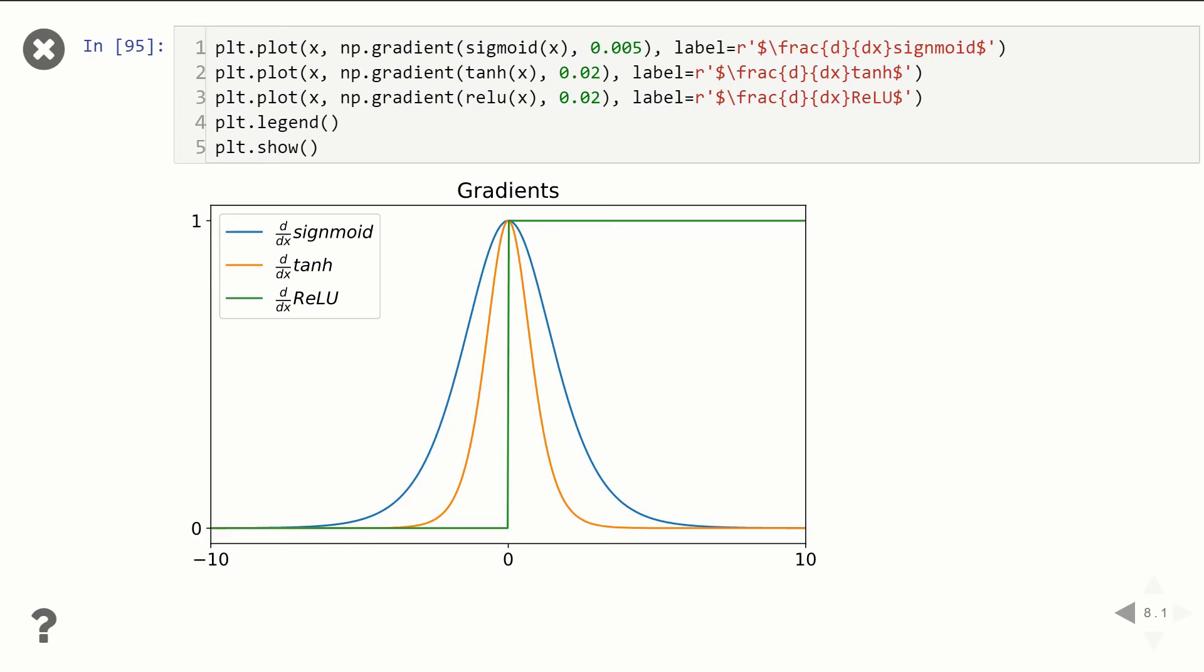So to wrap everything up, the ideal activation function for the majority of your layers is going to be either ReLU or leaky ReLU. The reason being it's zero centered and it doesn't suffer from the vanishing gradient problem.